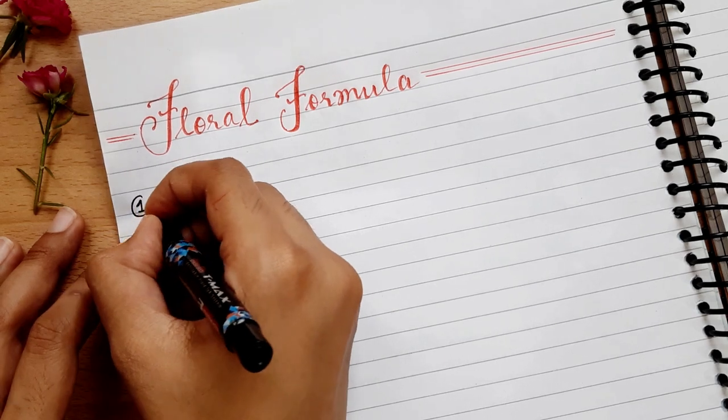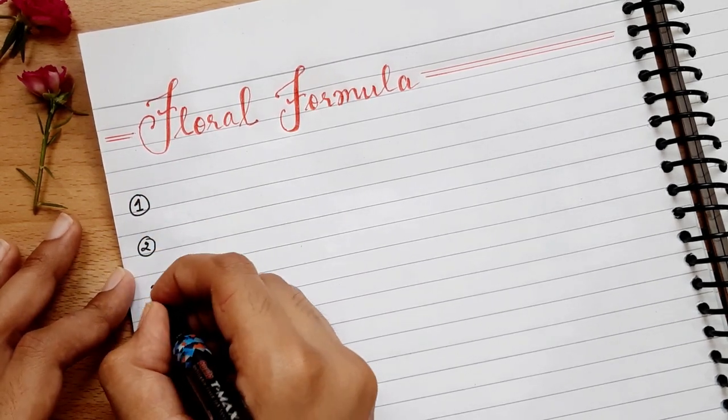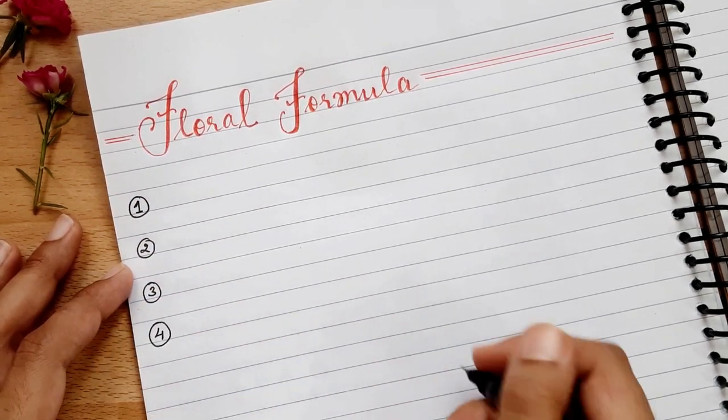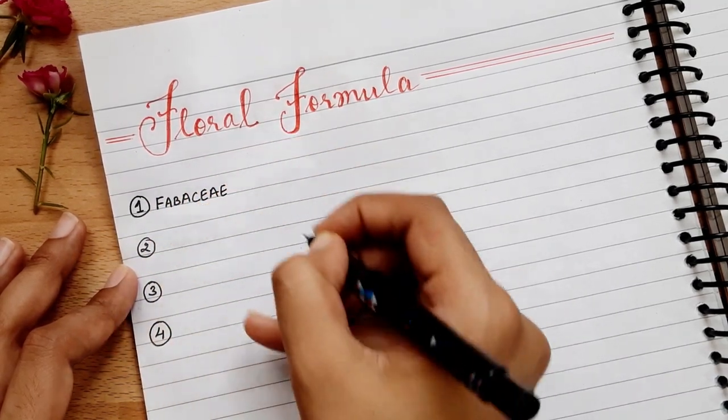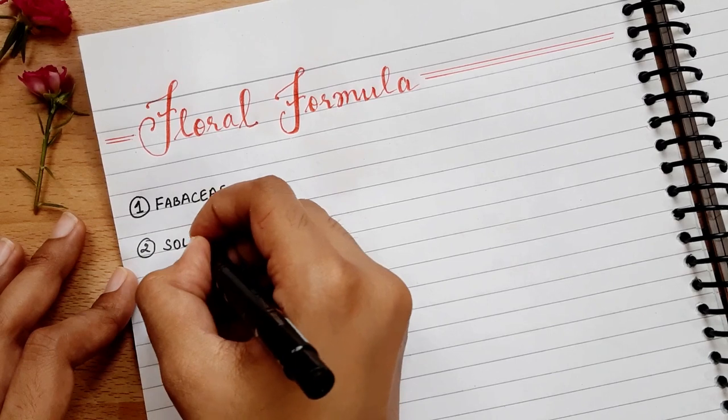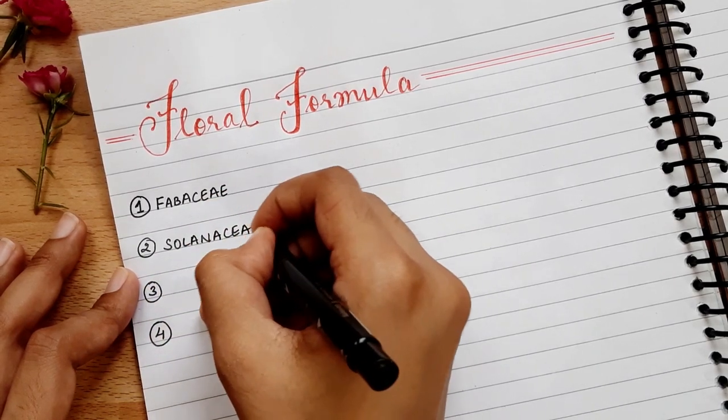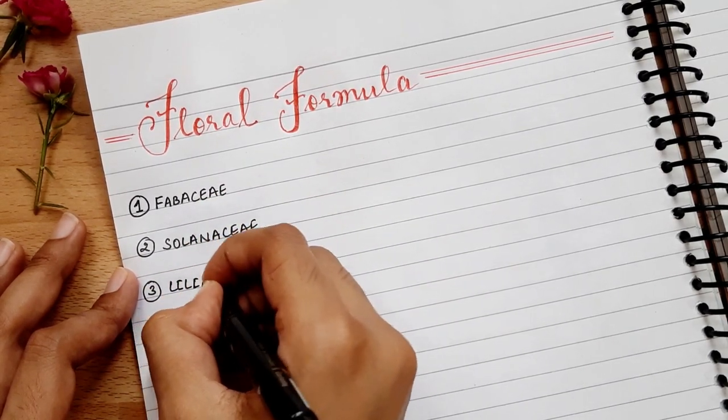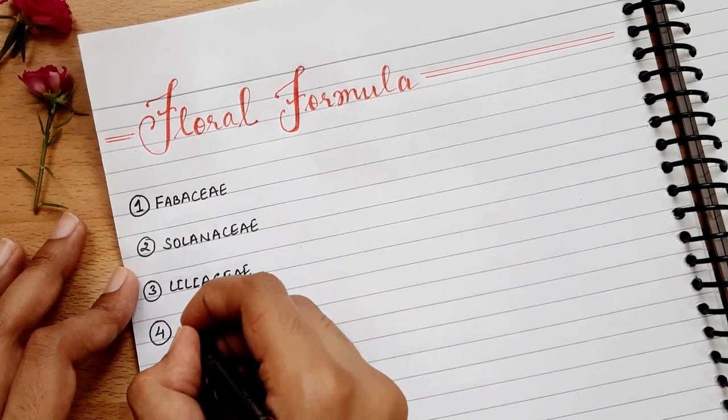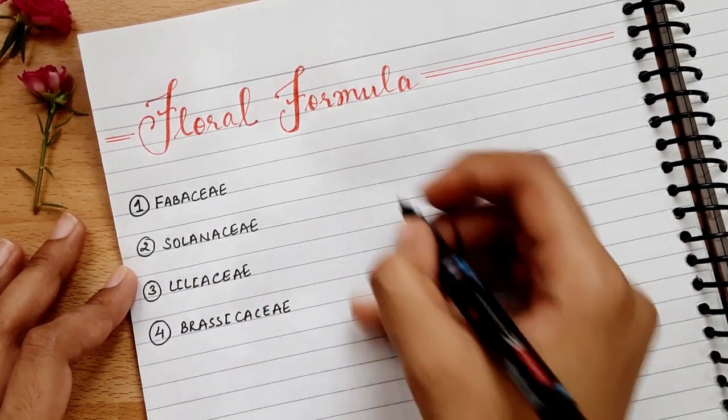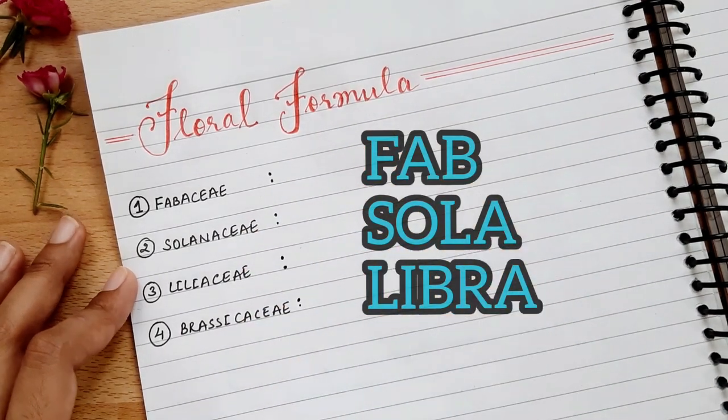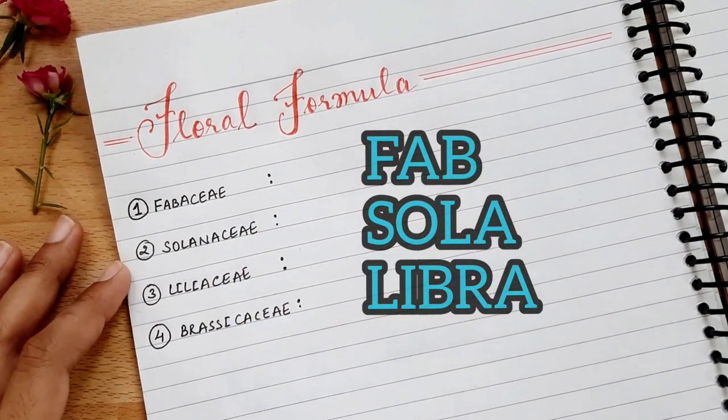Now, we have 4 families of floral formulas in NCERT. First, we will put these families in an order. You will remember them in this order. First, Fabaceae, then Solanaceae, then Liliaceae, and last Brassicaceae. You can remember this as well: Fab, Solal, Libra. Fab, Solal, Libra.